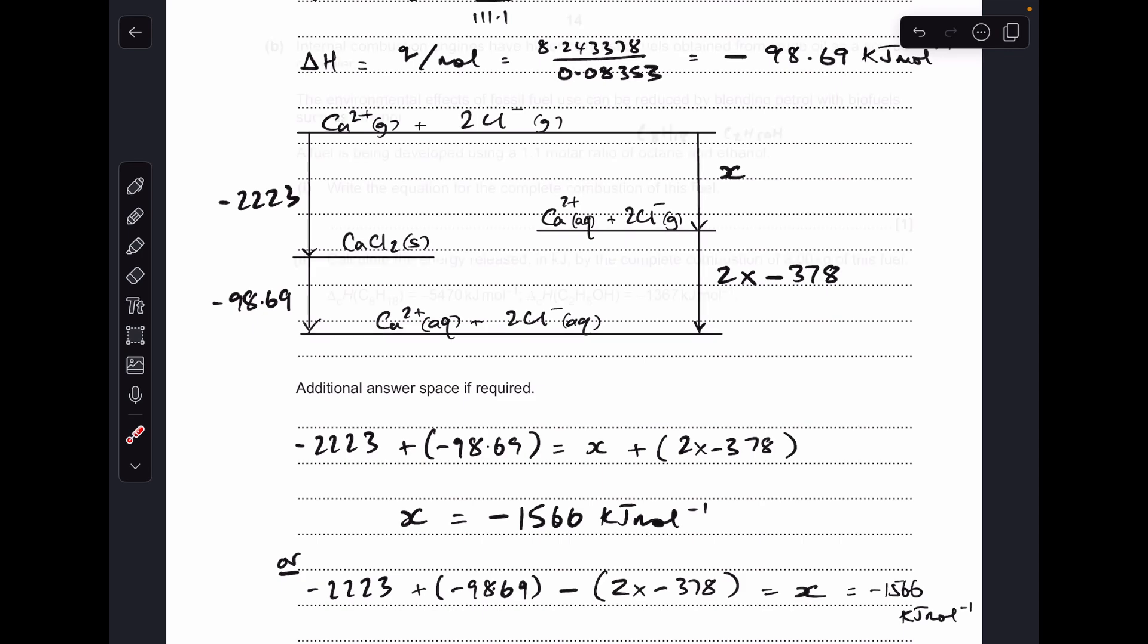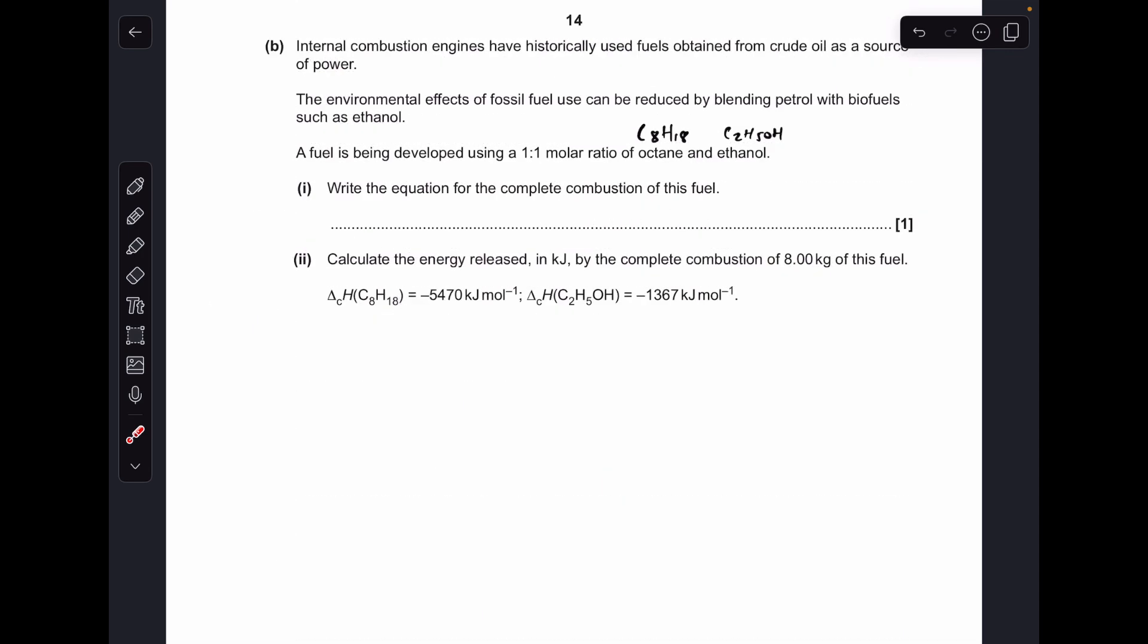So moving on to part B, it's a bit awkward this one I think, getting your head around what they're doing. Fuel's being developed using the one to one molar ratio of octane and ethanol. I've written up the formulae of the two fuels that are making up the fuel. You could either treat these as separate things in the equation. What I did was I just added the atoms together and just came up with the overall molecular formula for the fuel. So if you add the carbons, the hydrogens, and the oxygen, you get a fuel with the formula C10H24O.